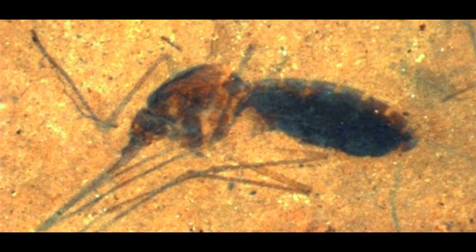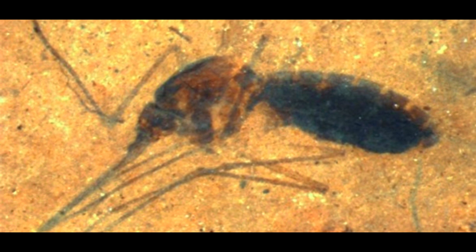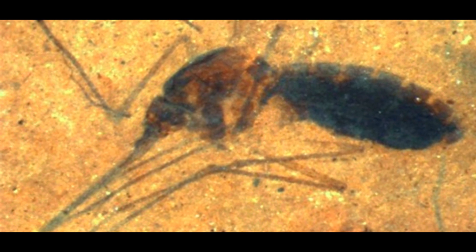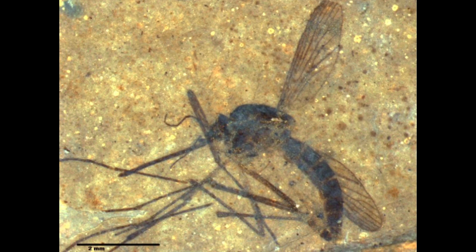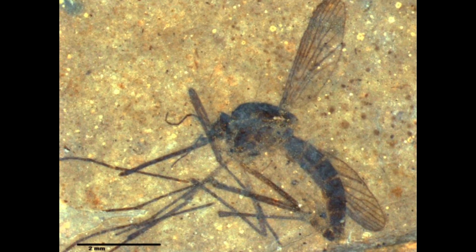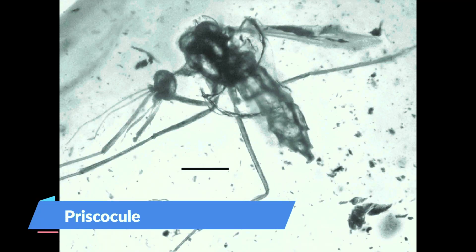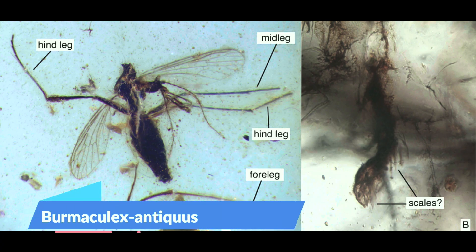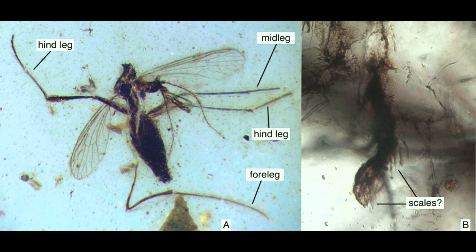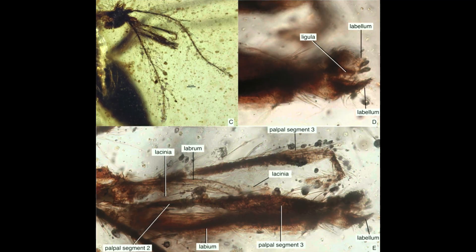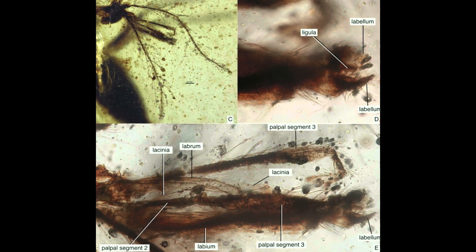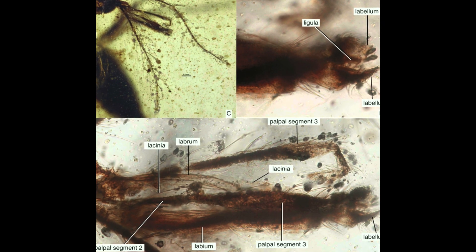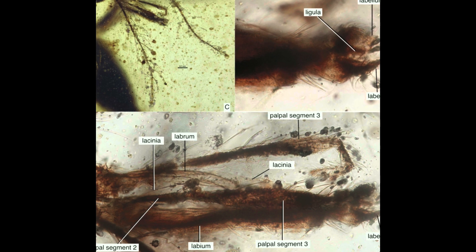The oldest known mosquitoes come from amber, dating to the late Cretaceous. Three species of Cretaceous mosquitoes are currently known: Priscoculex burmanicus and Burmaculex antiquus are known from Burmese amber from Myanmar, which dates to the earliest part of the Cenomanian stage of the late Cretaceous, around 99 million years ago.